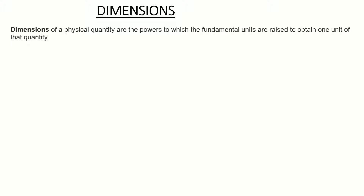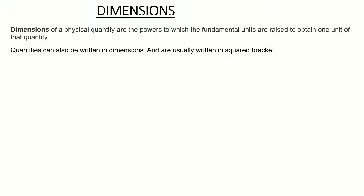Next we look into dimensions. The dimensions of a physical quantity are the powers to which the fundamental units are raised to obtain one unit of that quantity. Dimensions in engineering are very important in deriving equations and also help us in knowing the units for a measurement. We can write quantities in dimensions, and when doing that we write them in square brackets, which I'll show in the next few slides.